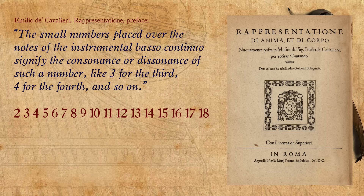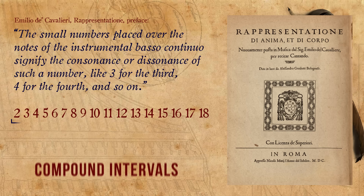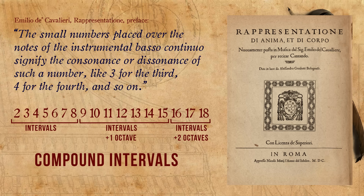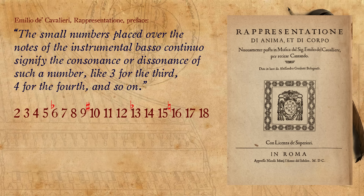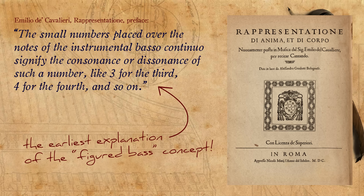As opposed to what became the standard in basso continuo notation later in the century, where only the numbers 2 to 9 are used, Cavalieri uses compound intervals, and so he can refer to specific notes on the note system, and not only to generic intervals. He then adds that it is possible to alter the numbers or intervals with accidentals. This simple definition by Cavalieri is the earliest explanation of the figured bass concept, and will stay correct until the end of the basso continuo era.